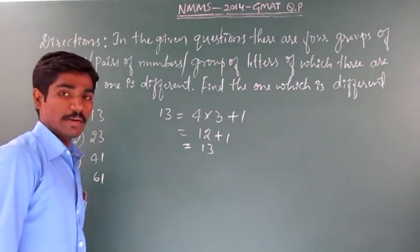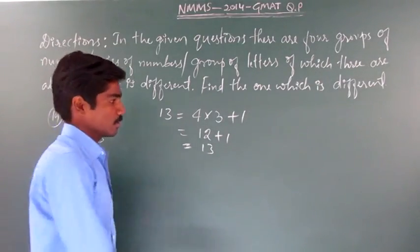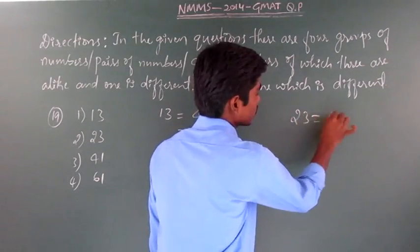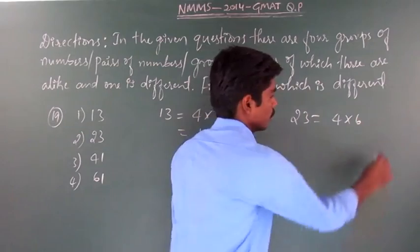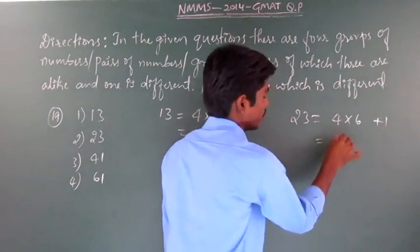Now this 23, I will write it as a multiple of 4 first. 23 is multiple of 4, that is 4 into 6 plus 1. See friends...